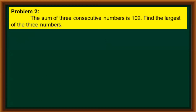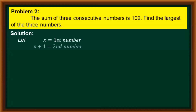For our next problem: the sum of 3 consecutive numbers is 102. Find the largest of the 3 numbers. Since the problem involves 3 consecutive numbers, we start by letting x equal our first number. Since we are talking about consecutive numbers, the second number will be x plus 1.